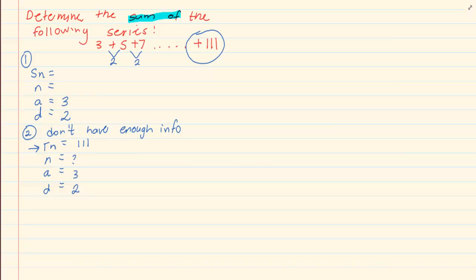Since we have 3 out of 4, we go to our formula and substitute what we need. We're using a T_n formula and it's arithmetic. We substitute a is 3 plus we don't have n, we have d is 2, and we have that T_n is equal to 111.